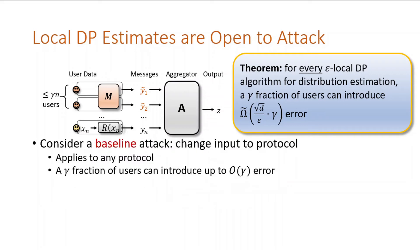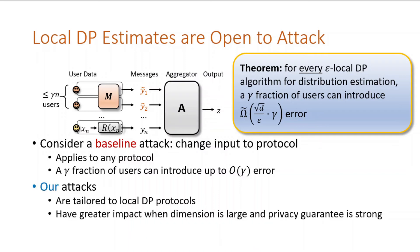One attack that you may consider is input manipulation. This applies to any protocol in any model, and a gamma fraction can introduce only gamma error. On the other hand, our attacks are tailored to local DP and get worse with dimension and privacy guarantee.